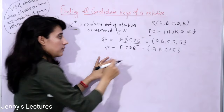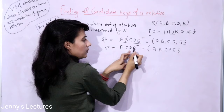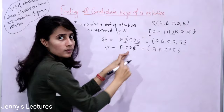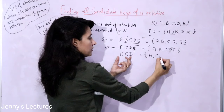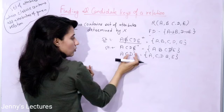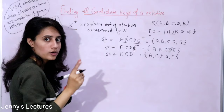Now check again: can you discard anything from A, C, D, E? D can determine E — since you have D, you can determine E, so you can discard E. Now you have A, C, D. The closure of ACD is: A gives B, D gives E, and ACD is already present — so the closure contains all five attributes. ACD is still a super key.